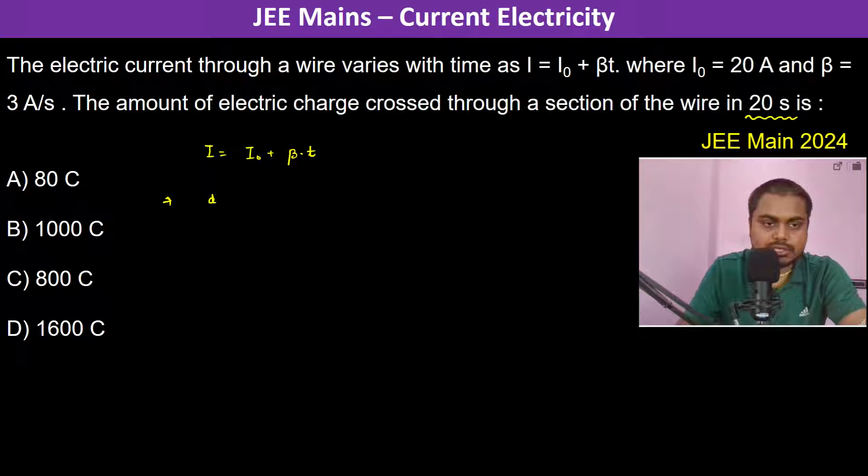I can be written as dQ divided by dt, which is again 20 plus 3 into T.